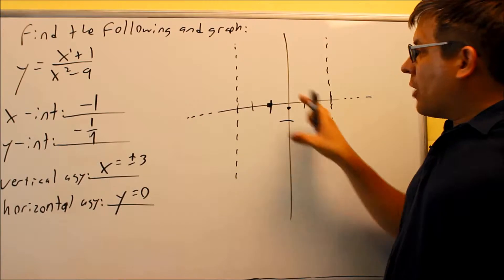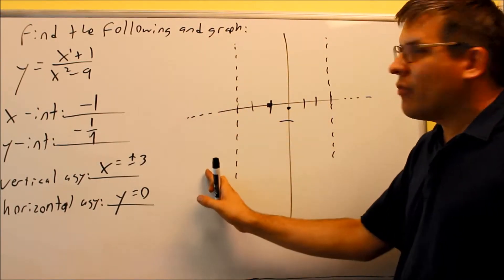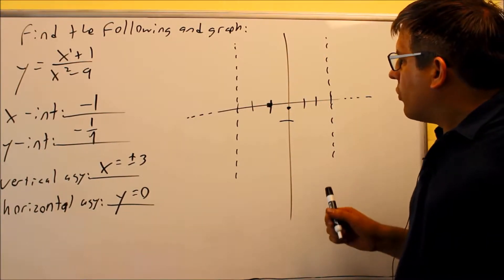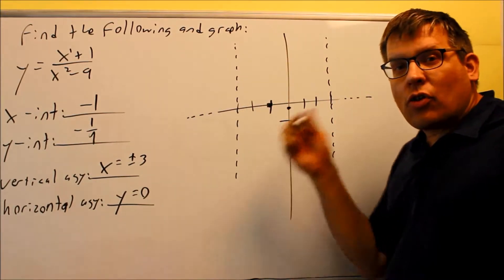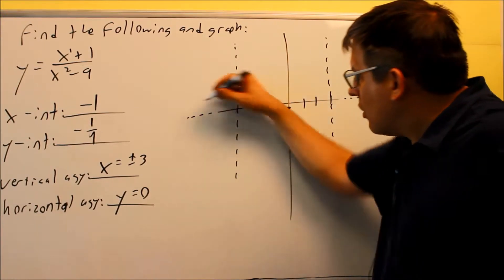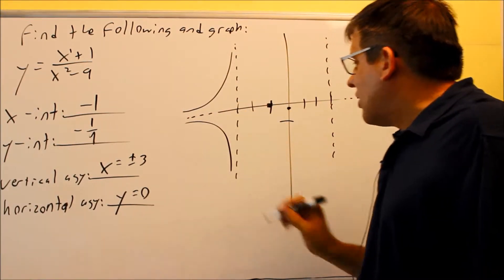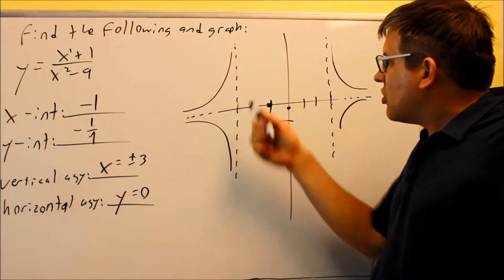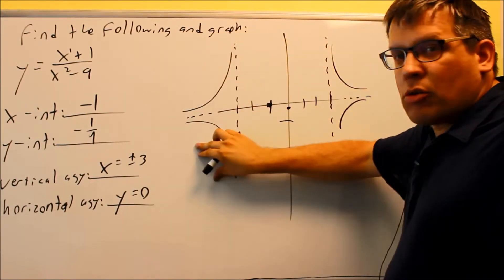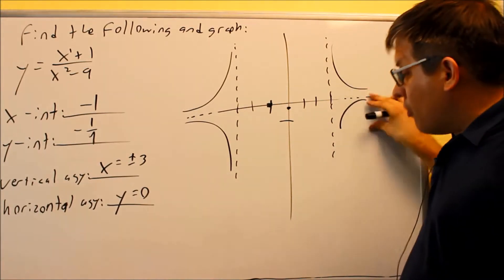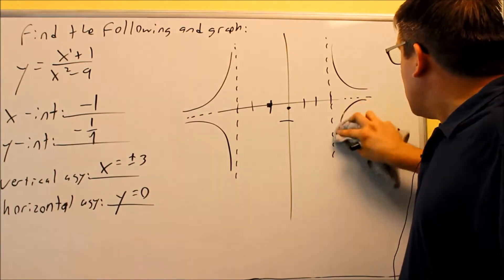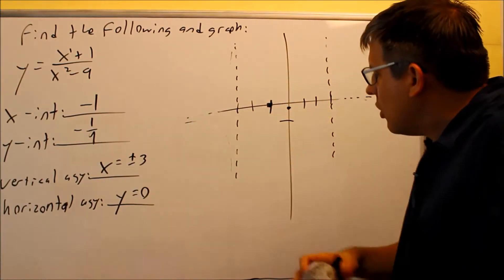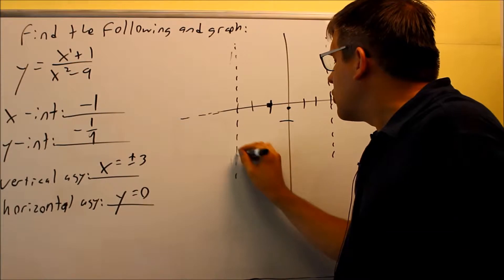The graph is now split into three different regions: a left outer region, a middle portion, and a right outer region. On the two outer ends, the graph can only go one of two ways — either above or below the horizontal asymptote — but never both. To determine which, we need to use test points. The test points will tell us whether the graph is drawn above or below in each region.